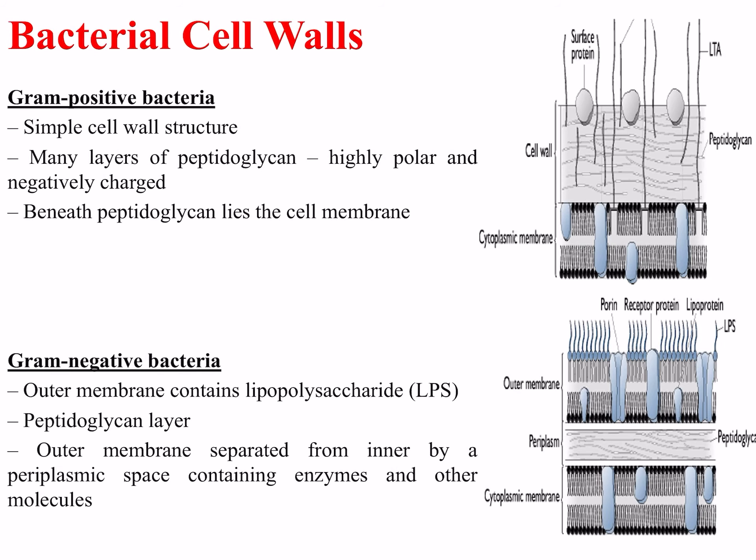Gram-positive bacteria have a simple cell wall structure with many layers of peptidoglycan, which is highly polar and negatively charged, beneath which lies the cell membrane, as shown on the top right of the diagram. Gram-negative bacteria have an outer membrane containing lipopolysaccharide, a thin peptidoglycan layer, and a cytoplasmic membrane underneath. The outer membrane is separated from the inner layer by a periplasmic space containing enzymes and other molecules, shown in the bottom right diagram.